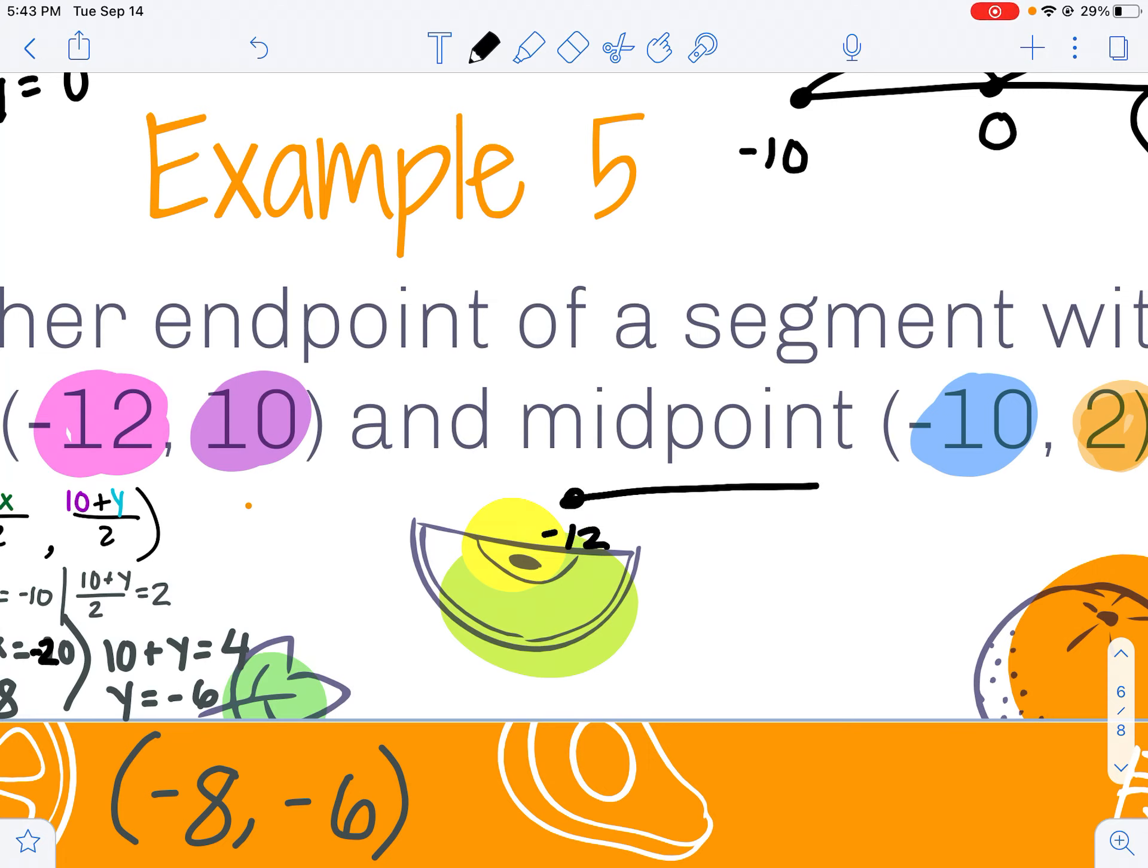My x value negative 12. My midpoint is at negative 10. I went up 2. So I need to go up 2 more to find my missing x value.